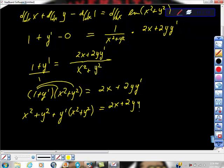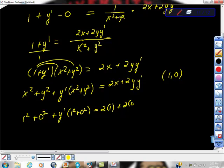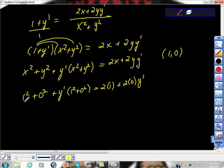So I'm going to go ahead and do my substitution for that value. I'm going to get 1 squared plus 0 squared plus y prime times 1 squared plus 0 squared is equal to 2 times 1 plus 2 times 0 times y prime. And if you're wondering what all this is, I'm just substituting in every place I found an x I put a 1, and every place I found a y I put a 0. y is not y prime though, right?